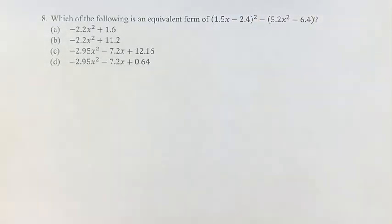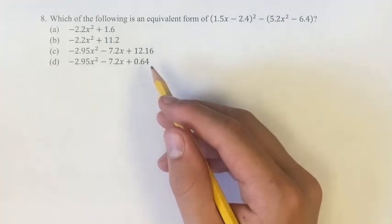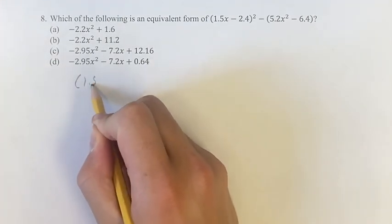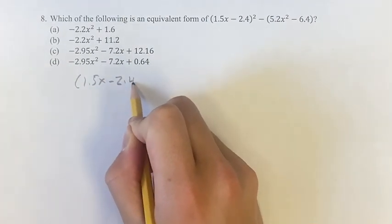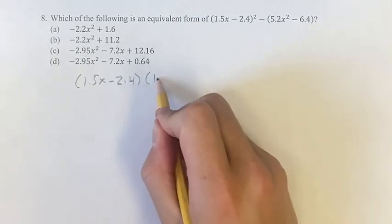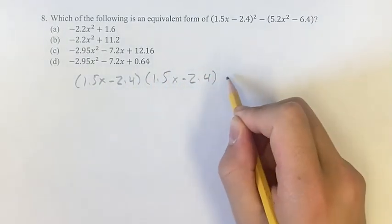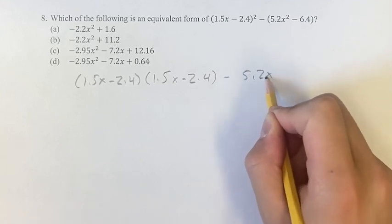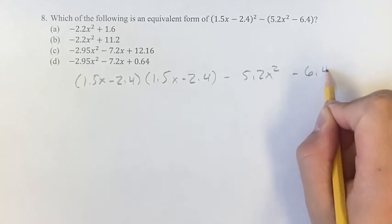So the first thing we have to do is distribute out this squared. So we have 1.5x minus 2.4 times 1.5x minus 2.4. This is minus 5.2x squared minus 6.4.